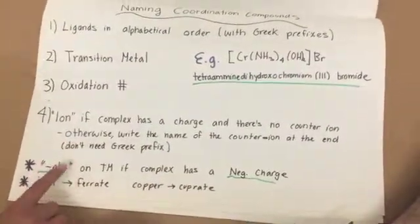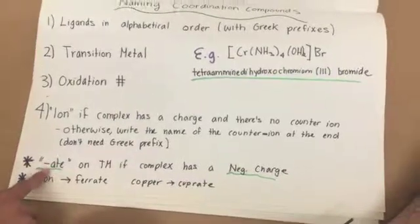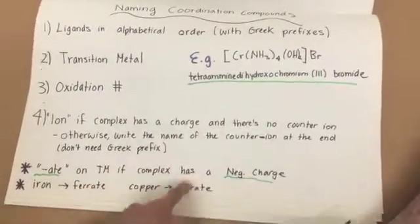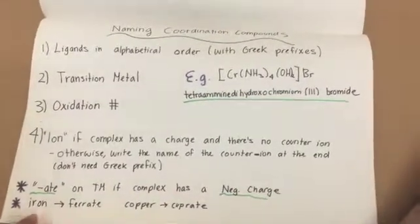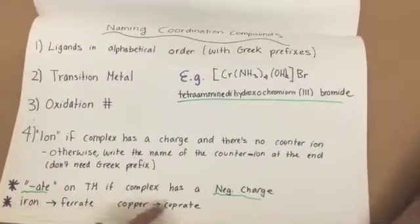Some things to keep in mind are you want to add the suffix 8 onto the transition metal if the complex has a negative charge. But it's also important to remember that iron becomes ferrate and copper becomes cuprate.